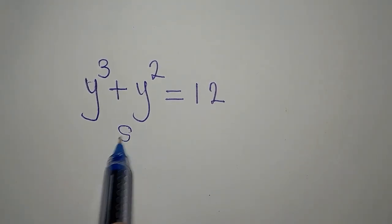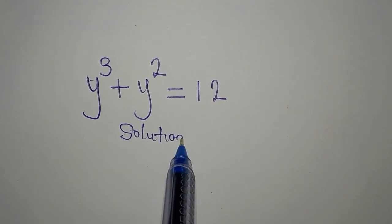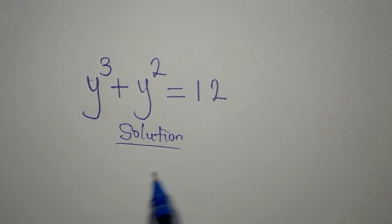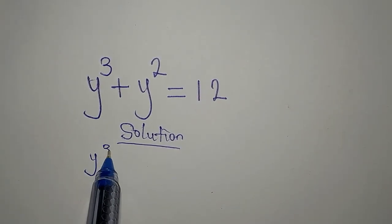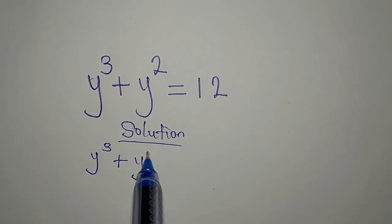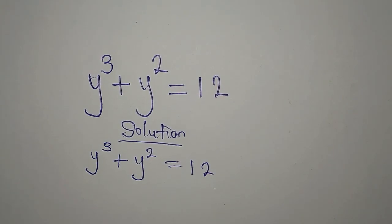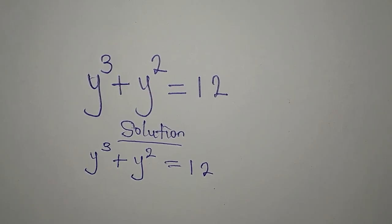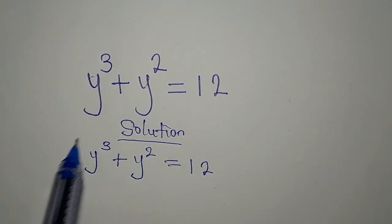Let's provide a solution to this problem: y to the power of 3 plus y to the power of 2 equals 12. We can express 12 in a specific form, which will be the fastest way for us.